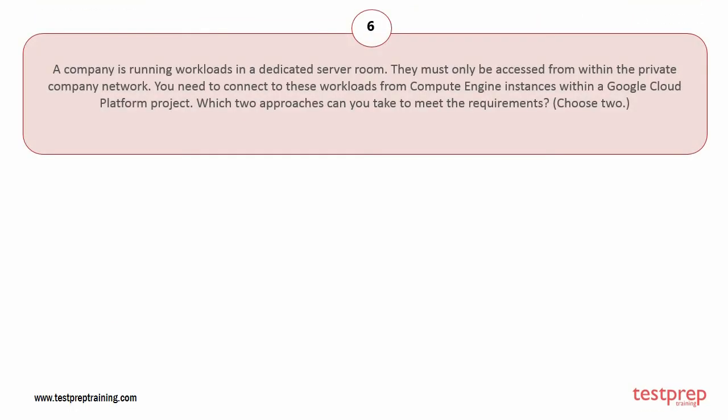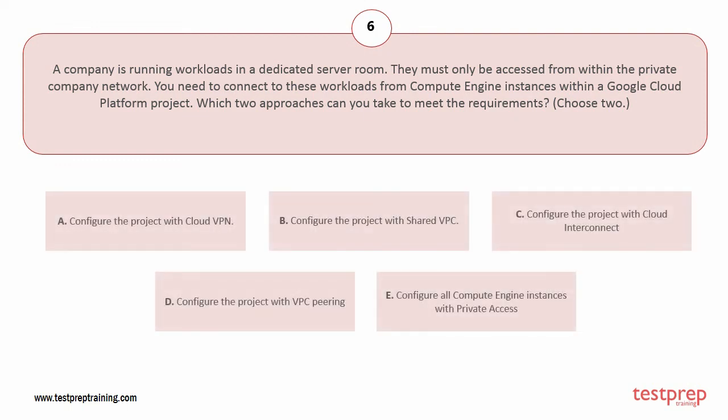Question number six: a company is running workloads in a dedicated server room that must only be accessed from within the private company network. You need to connect to these workloads from Compute Engine instances within a Google Cloud Platform project. Which two approaches can you take? Choose two. Options: A) configure the project with Cloud VPN, B) configure the project with Shared VPC, C) configure the project with Cloud Interconnect, D) configure the project with VPC peering, E) configure all Compute Engine instances with private access.